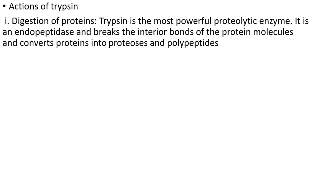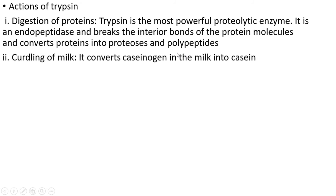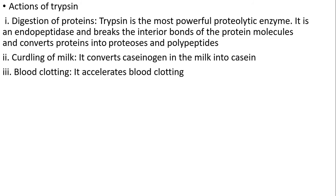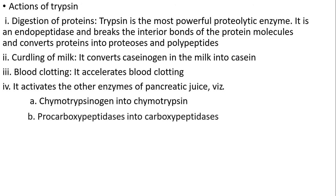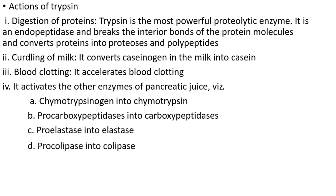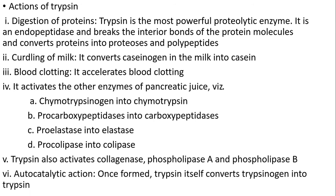Actions of trypsin: first is digestion of protein — trypsin is the most powerful proteolytic enzyme. It cleaves peptide bonds and breaks the interior bonds of the protein molecule, converting proteins into proteoses and polypeptides. Curdling of milk — it converts caseinogen in milk into casein. Blood clotting — it accelerates blood clotting. It also activates other enzymes in pancreatic juice, namely chymotrypsinogen into chymotrypsin, procarboxypeptidase into carboxypeptidase, proelastase into elastase, procolipase into colipase, and also activates collagenase, phospholipase A, and phospholipase B. Autocatalytic action: once formed, trypsin itself converts trypsinogen into trypsin.